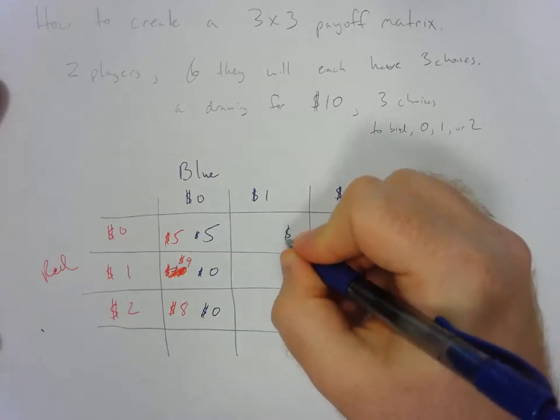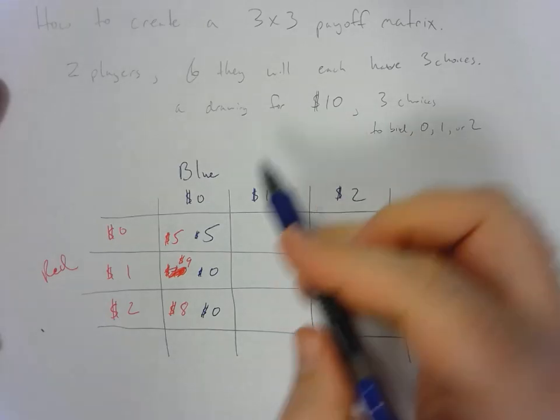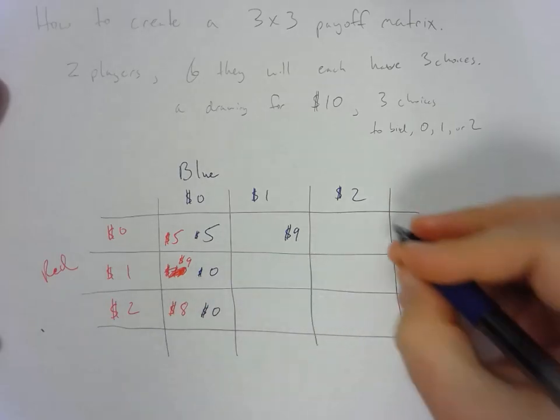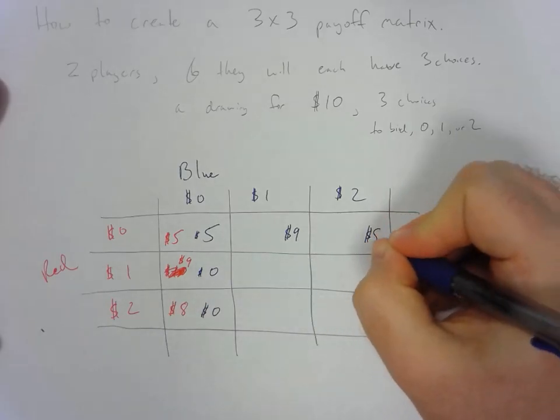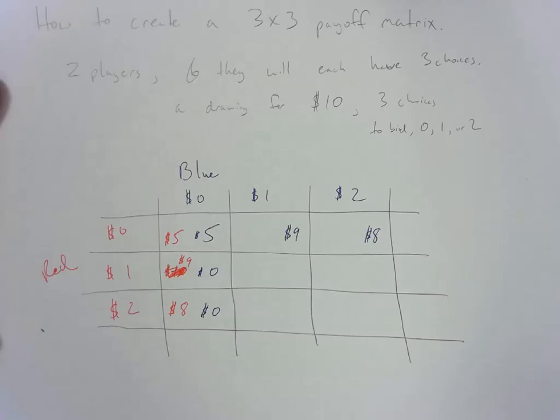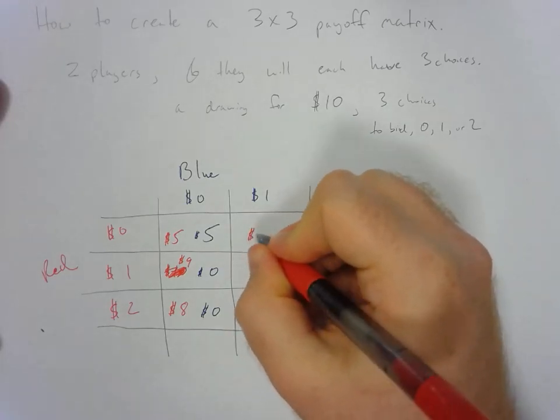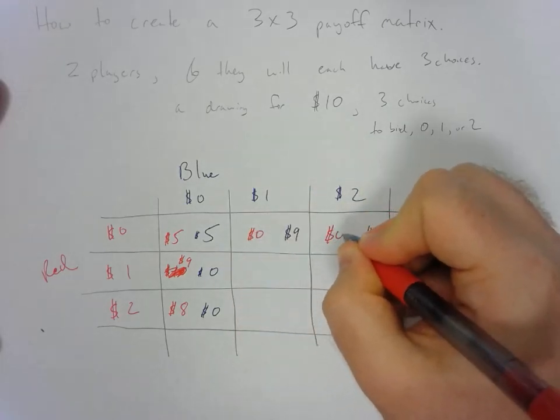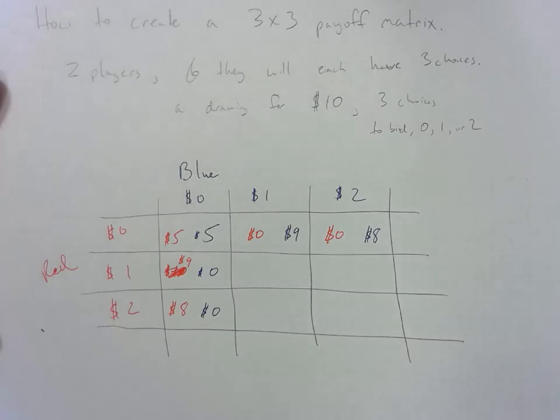We can do the same thing over here for blue. If they bid 1 and red bid 0 they'll get $9. If they bid 2 they'll win and end up with $8 whereas the red player will win nothing.